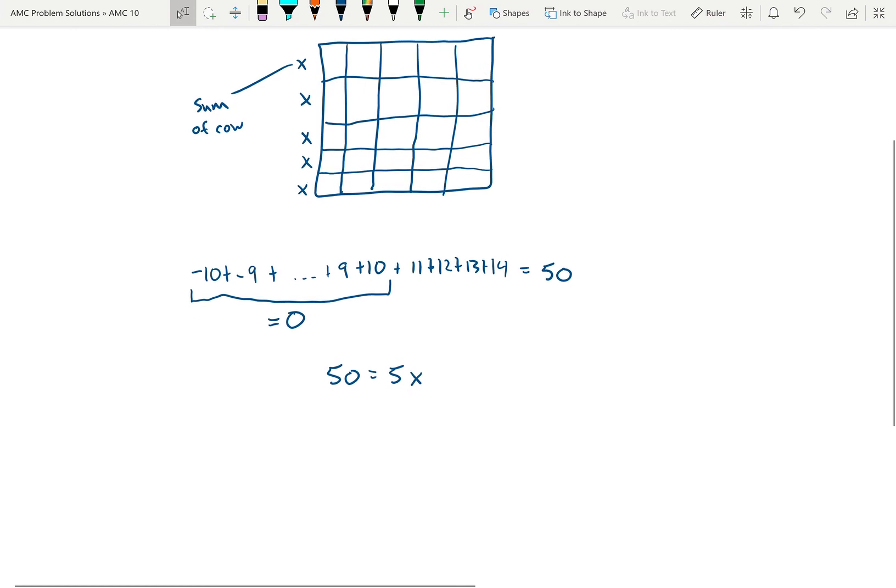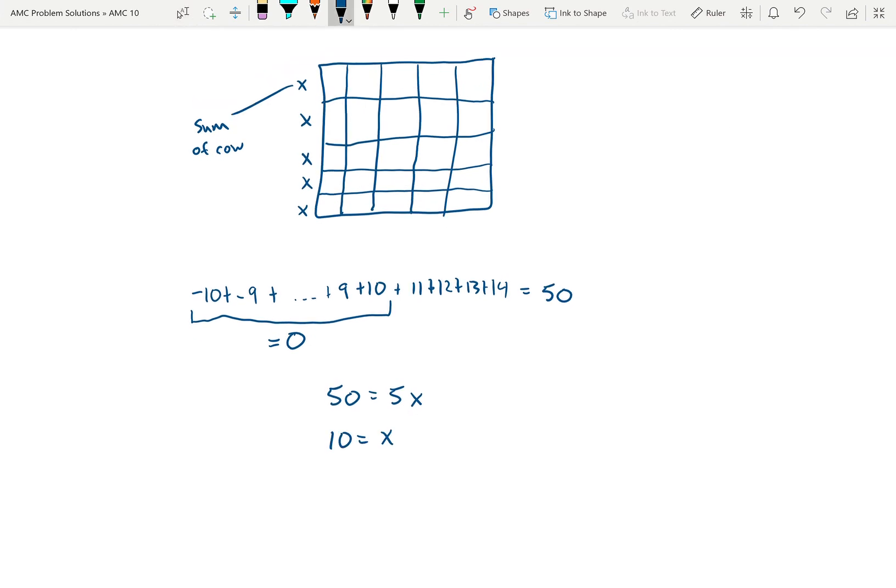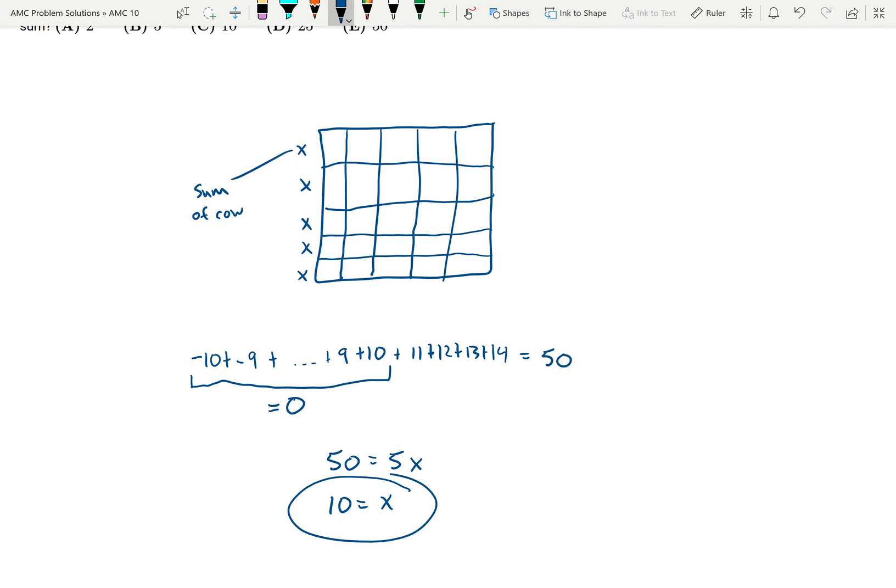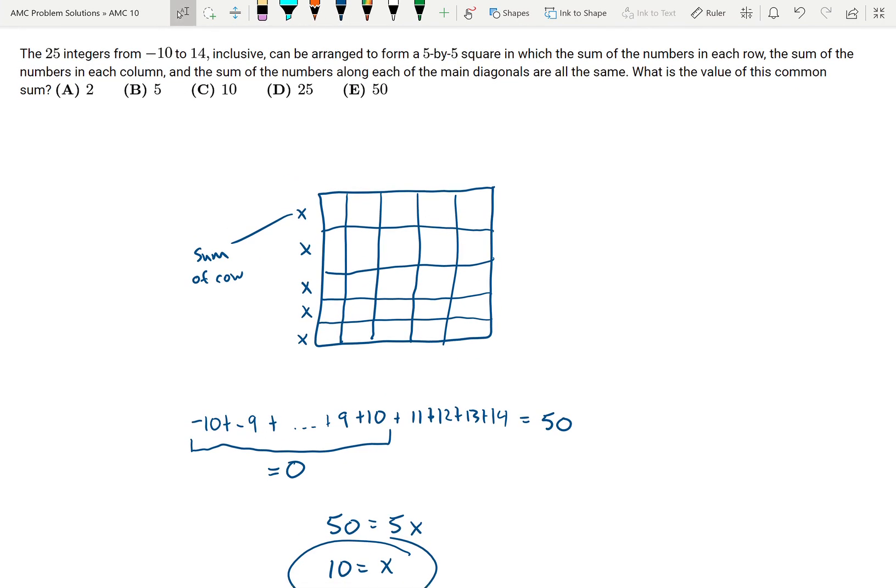Divide by 5 each side, 10 equals X, and there we've found the value of the common sum in each row, column, and diagonal is 10.